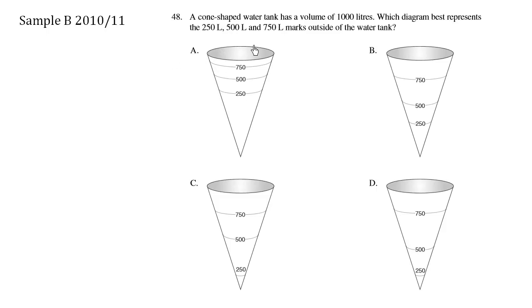A cone-shaped water tank has a volume of a thousand liters. Which diagram best represents the 250, 500, and 750 marks outside the water tank? So let's take a look at choice A. I see there's 250 milliliters here, and